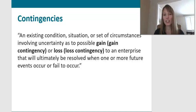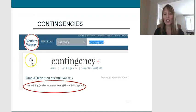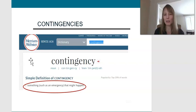We see on this slide the GAAP definition for contingencies, but I prefer a slightly simplified definition: something that might happen. The accounting issue we're faced with is that something took place this accounting period — perhaps a lawsuit began — and we think we may have to either pay out or receive cash with this lawsuit.